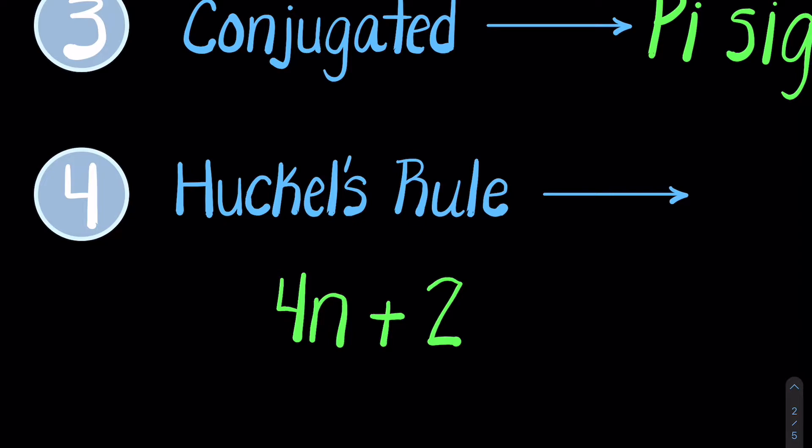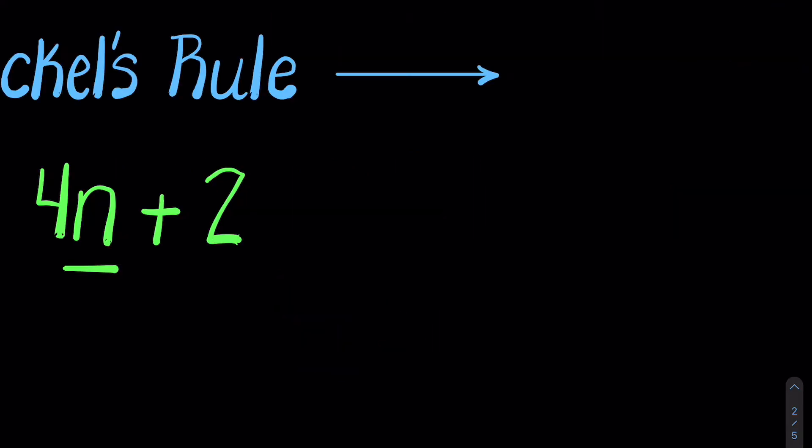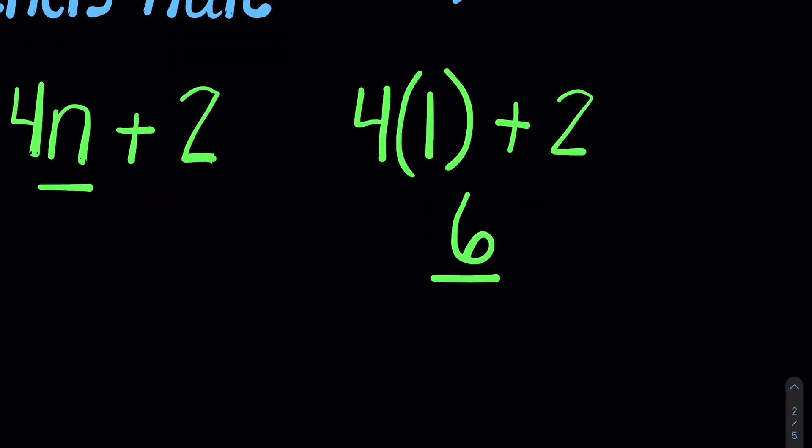So n is simply an integer value. It could be 0, 1, 2, 3, 4, 5, etc. You will see increments from 2 to 6 to 10 to 14 and so on. These molecules will be aromatic if all the other conditions are met. This is just an extra check mark. So we'll use benzene, for example. If we plug in the integer 1, 4 times 1 plus 2, we get 6 pi electrons. This is how many pi electrons benzene contains.